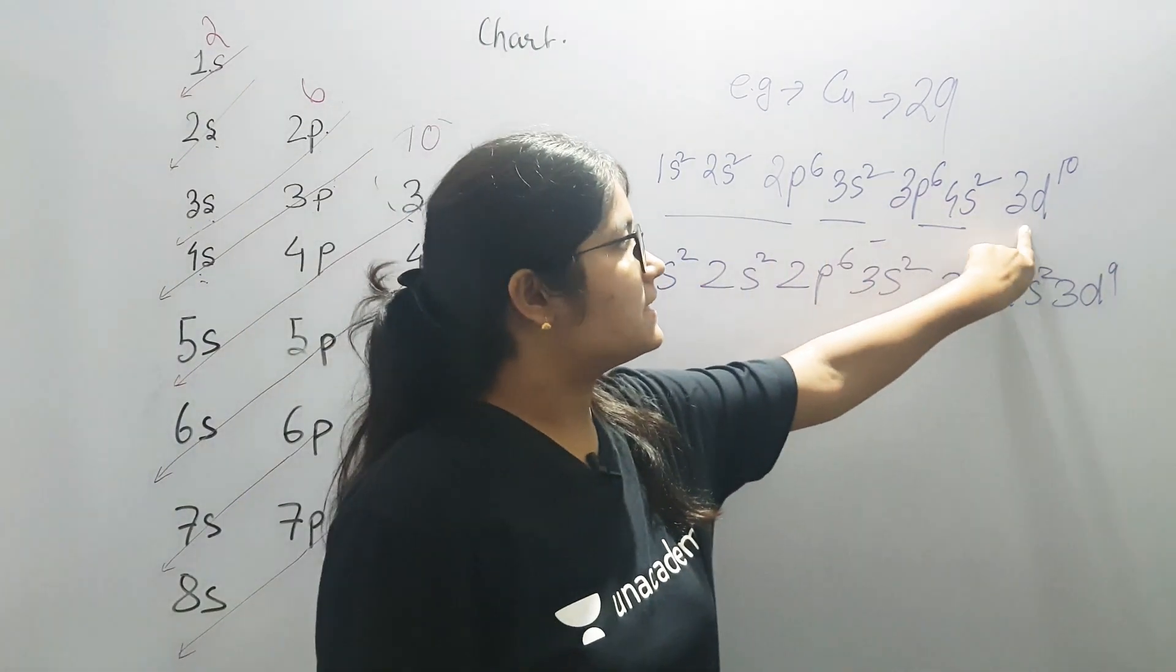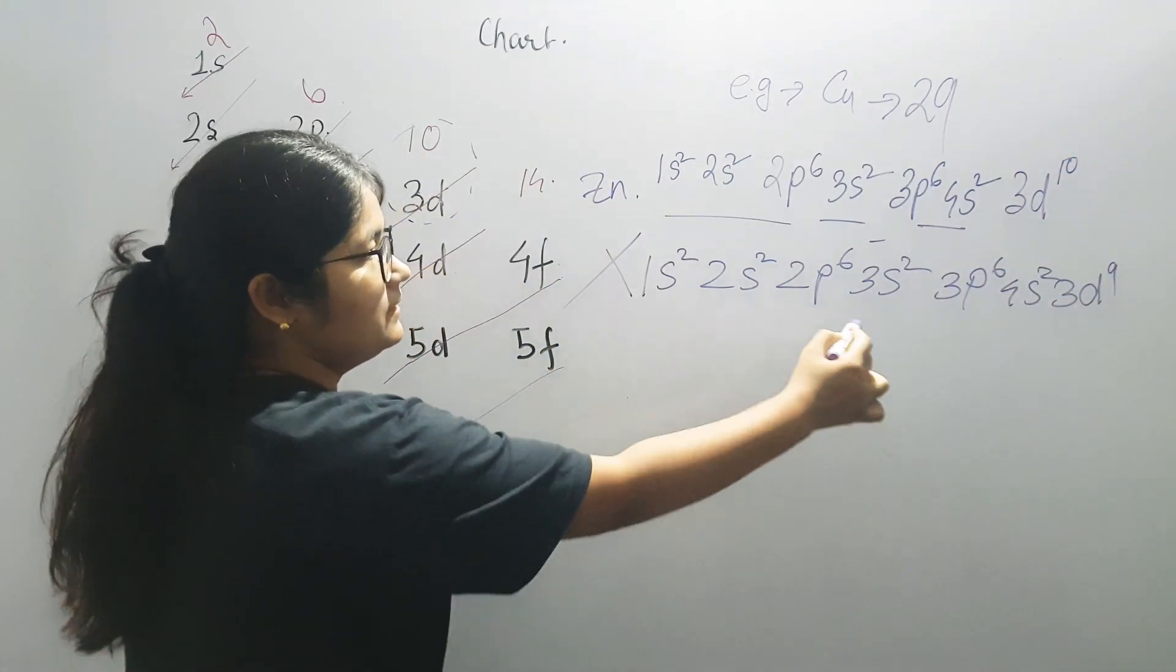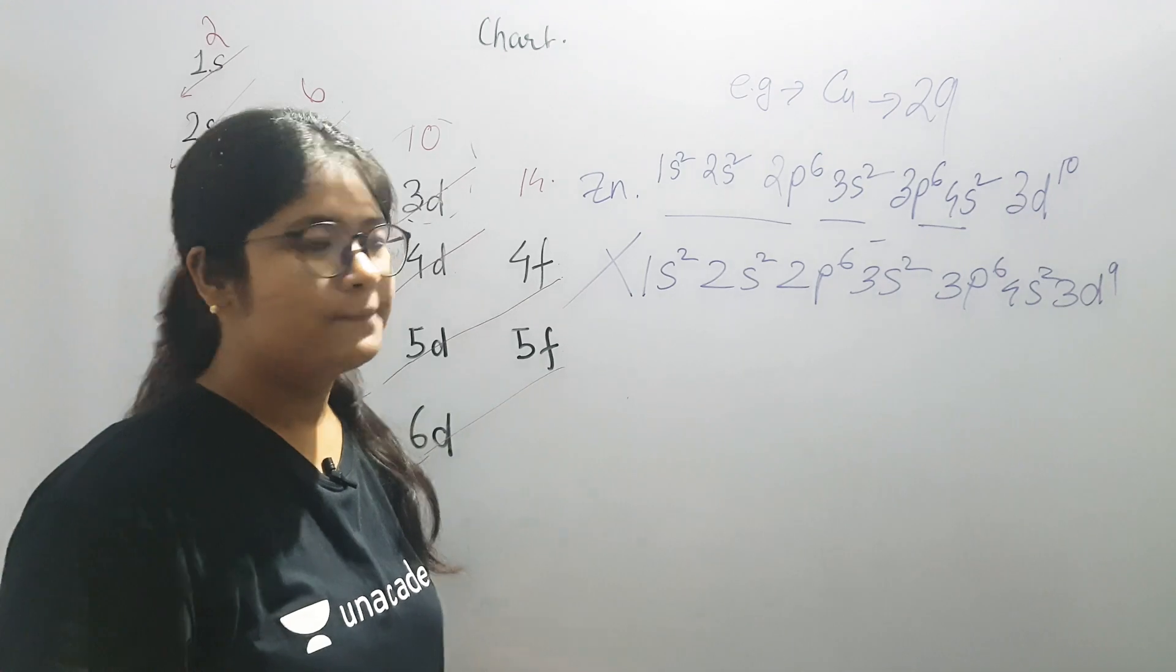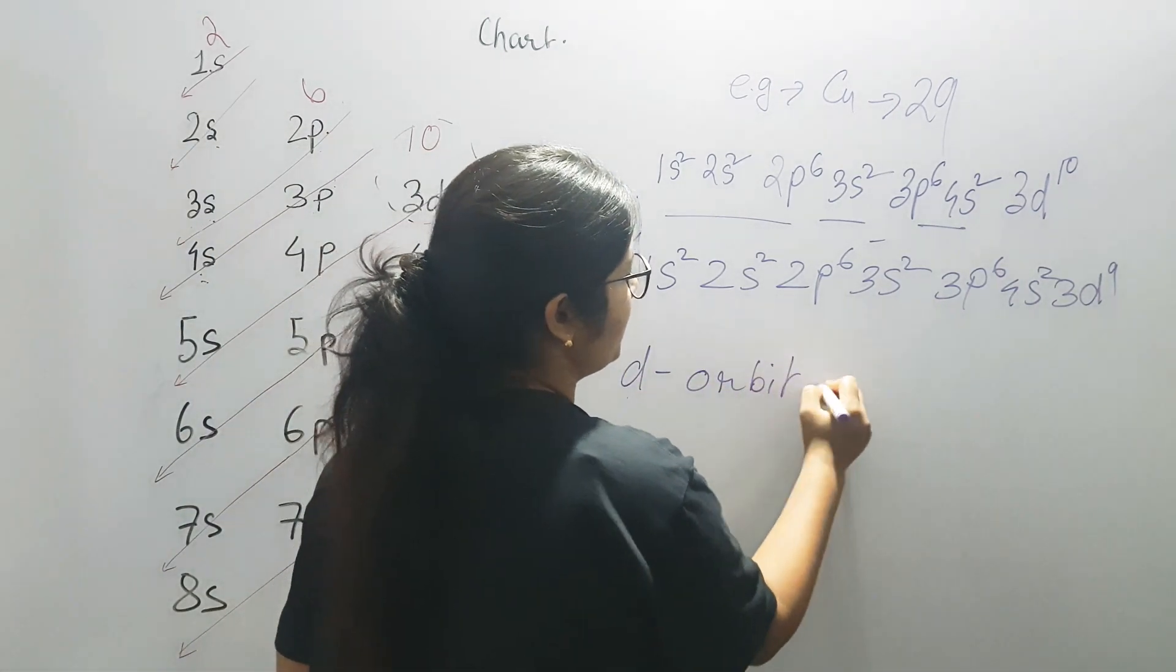The question is, if this is right for zinc, then why is it wrong for copper? What is the problem in this sequence? The problem is that there is a d-orbital rule. What is the d-orbital rule?